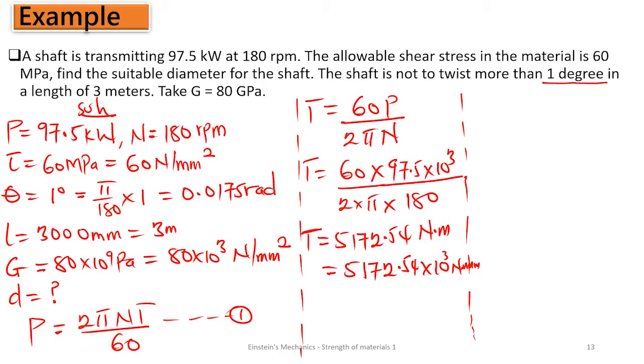We can convert the torque to Newton millimeters as 5172.54 times 10³ Newton millimeters. Now we have torque and we're interested in finding the diameter from the equation of torque where we have shear.